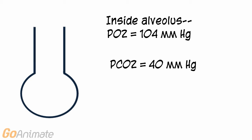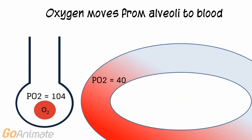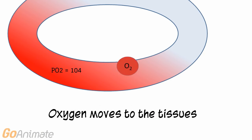The PO2 inside the alveolus of the lung is about 104 mmHg, and the PCO2 is about 40 mmHg. The PO2 inside the capillaries carrying deoxygenated blood surrounding the alveolus is about 40 mmHg. Oxygen diffuses from the higher PO2 of 104 to the lower PO2 of 40, so oxygen moves from the alveolus to the blood. The movement of oxygen into the blood increases the PO2 of the blood to 104 mmHg.